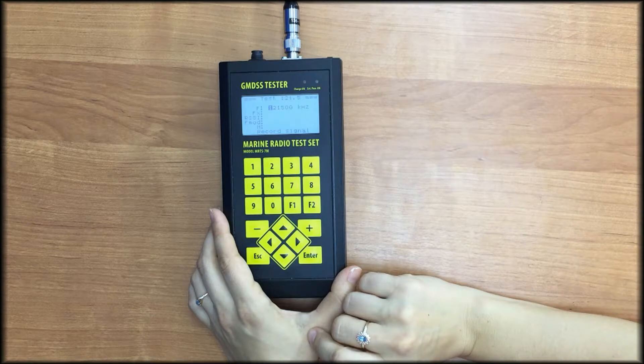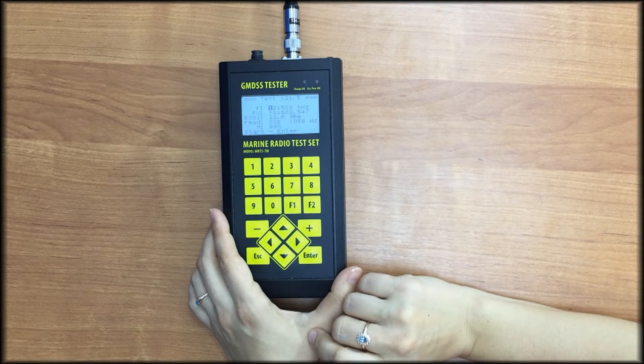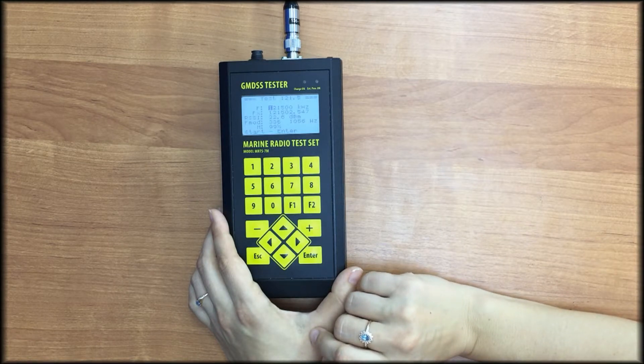We hear audio confirmation of homing signal presence. That's OK, the signal is received. Let's check what MRTS-7M has measured. We see nominal frequency in kHz, carrier frequency, signal power level.